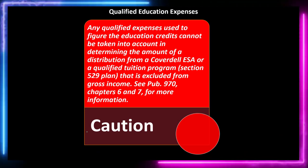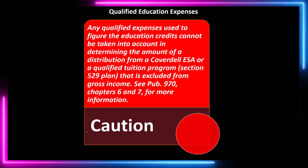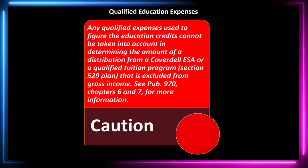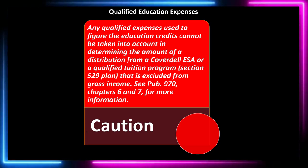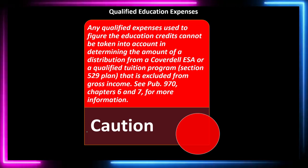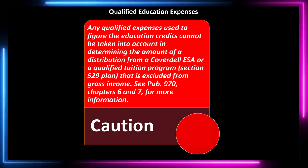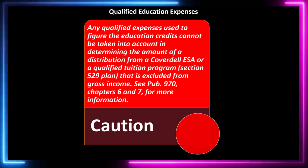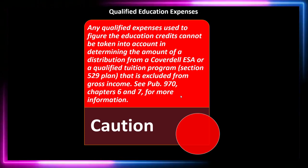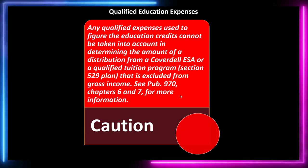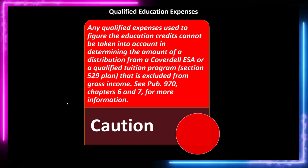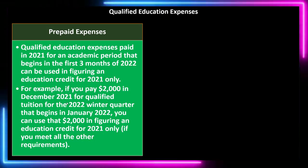Caution: any qualified expenses used to figure the education credit cannot also be used to determine the amount of a distribution from a Coverdell ESA or a qualified tuition program (Section 529 plan) that is excluded from gross income. See Publication 970 for more detail on interactions with Coverdell ESAs.